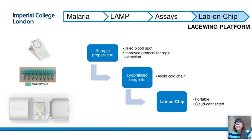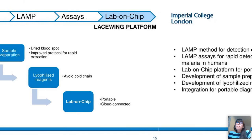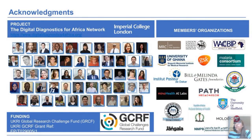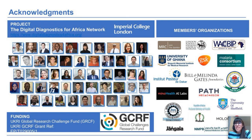We are working towards integration of a sample-to-answer diagnostic device, developing rapid low-cost extraction from blood and incorporation of lyophilized reagents to avoid cold chain. To summarize: we have developed a LAMP method for the detection of mutations related to artemisinin resistance, LAMP assays for rapid detection of plasmodium species causing malaria, and a laboratory platform integrating LAMP for portable and cloud-connected diagnostics. We are aiming to integrate a simple sample preparation module and lyophilized reagents with our portable platform for point-of-care diagnostics. I would like to acknowledge the Digital Diagnostics for Africa Network and the team at Imperial College London. Thank you very much — happy to answer any questions.